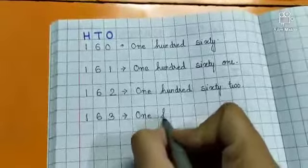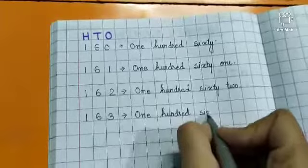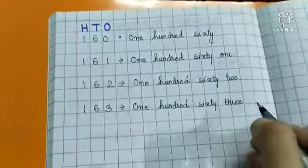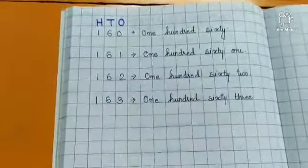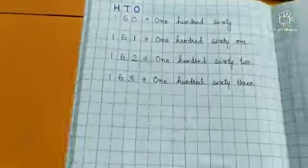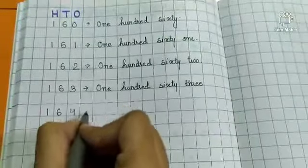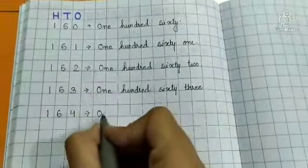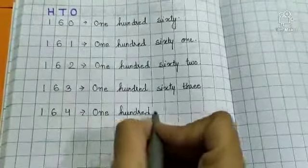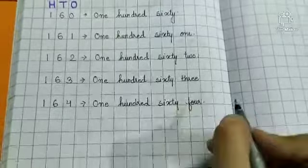163. O-N-E 1, H-U-N D-R-E-D 100, S-I-X-T-Y 60, T-H-R-E-E 3. Then 164. O-N-E 1, H-U-N D-R-E-D 100, S-I-X-T-Y 60, F-O-U-R 4.